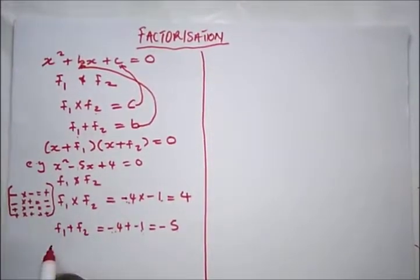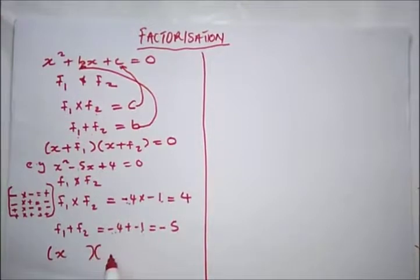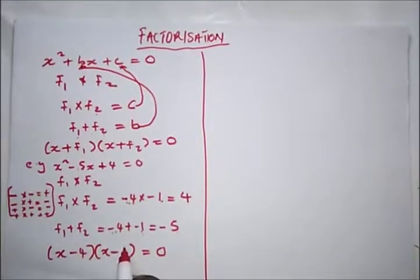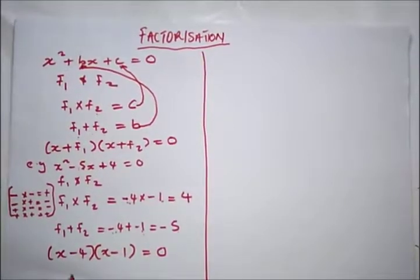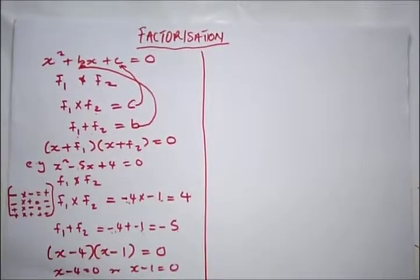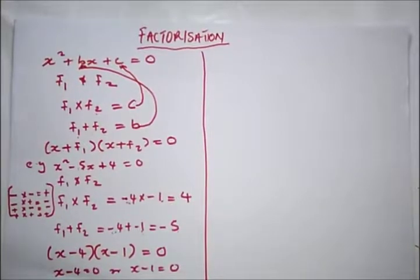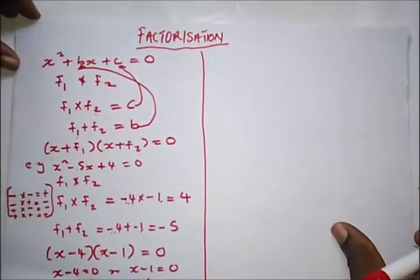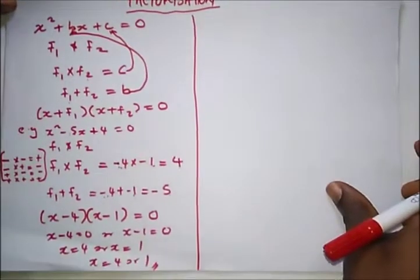All we need to do now is substitute these two factors into the brackets: (x − 4)(x − 1) = 0. So x minus 4 equals 0, or x minus 1 equals 0, which gives us x = 4 or x = 1. That's x equal to 4 or 1.